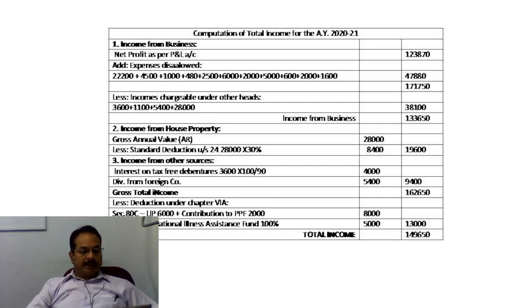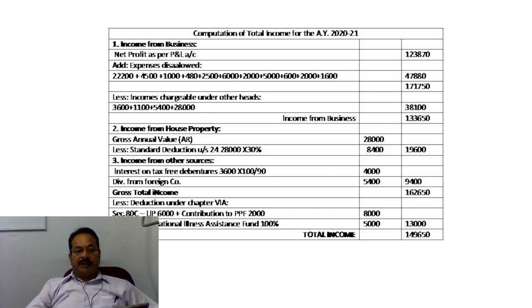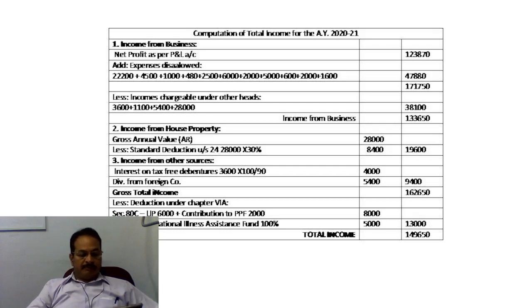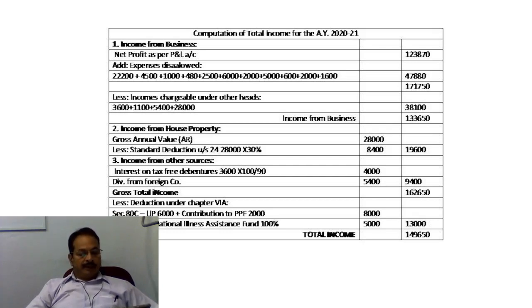Number three: Income from Other Sources. Interest on tax-free debentures — these are tax-free commercial securities. The net interest received is grossed up. Next item: dividend from foreign company — 5,400. Total in the outer column: 9,400.